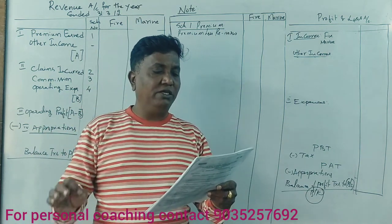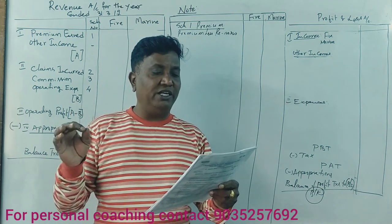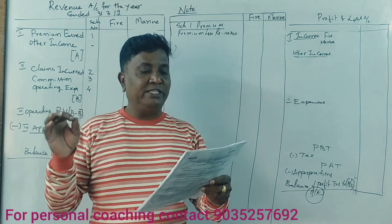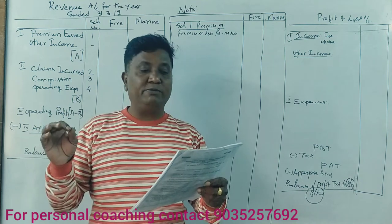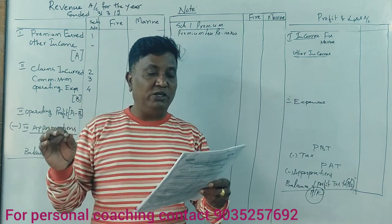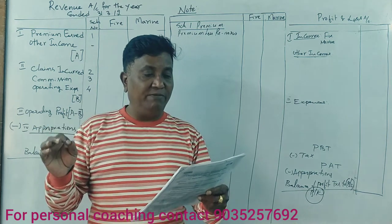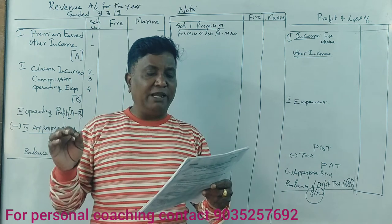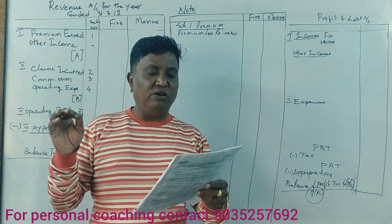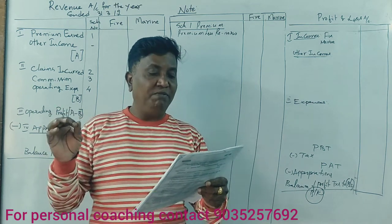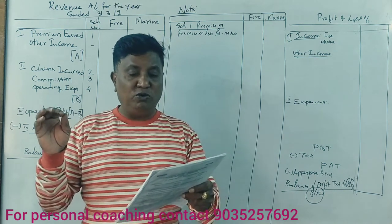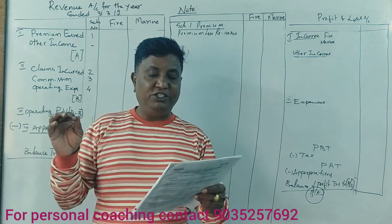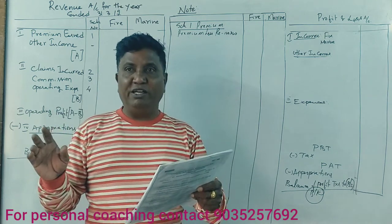The items include: Claims, Premium, Commission on reinsurance, Commission, Expenses of management, Reserve on expired risk 2014, Additional reserve 2014, Claims outstanding 2014, Premium outstanding 2014, and Depreciation on assets combined.